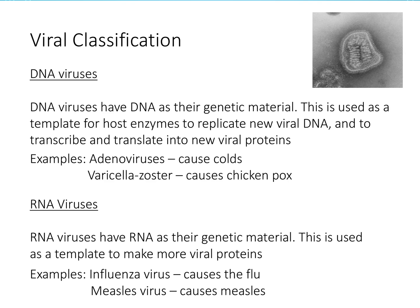DNA viruses have DNA as the genetic material, used as a template for host enzymes to replicate new viral DNA and to transcribe and translate into new viral proteins. Examples of DNA viruses are adenoviruses which cause colds, and varicella zoster which causes chickenpox. RNA viruses have RNA as genetic material, used as a template to make more viral proteins. Examples of RNA viruses are influenza which causes the flu, and measles virus which causes measles.